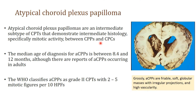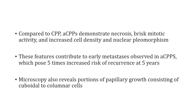Atypical choroid plexus papilloma grossly is a friable soft globular mass projecting into the ventricles. These are highly vascular tumours with an intermediate histology, specifically mitotic activity lying between the choroid plexus papilloma and the carcinoma. The median age group is typically between 8.4 and 12 months, although reports exist of atypical choroid plexus papillomas in adults. WHO classifies this as grade 2 with about 2 to 5 mitoses per 10 high power field. Compared to papillomas, they demonstrate necrosis, brisk mitotic activity, increased cellular density and nuclear pleomorphism.